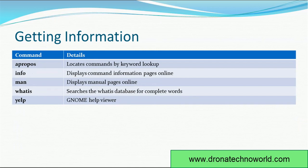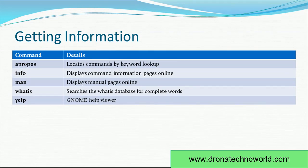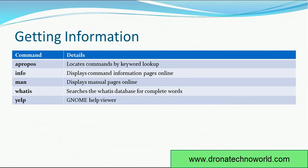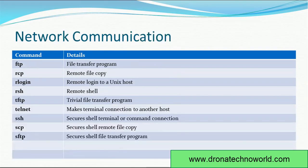Now, how about getting information? What commands are available in UNIX to get more information about commands or programming syntax? APROPOS locates commands by keyword lookup. INFO displays command information pages online. MAN is a very helpful command that shows not only the command description but also its author and usage pattern. WHATIS searches the whatis database for a complete word match. HELP is a help viewer tool where you can get information about commands.